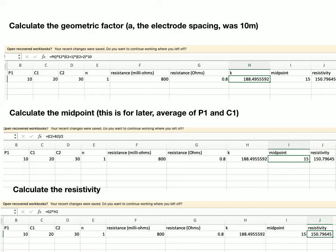The next column I've got set up here in my spreadsheet is for midpoint. Now, we'll use this later on for plotting it. I'm just calculating it now. It's the average distance between our inner electrodes, P1 and C1. So here, P1's at 10 metres. C1's at 20 metres.